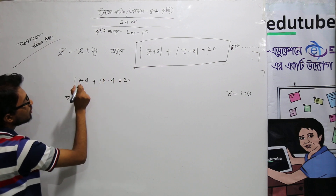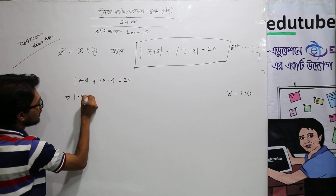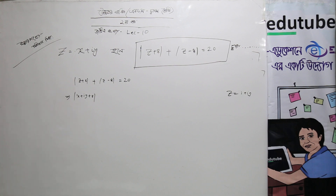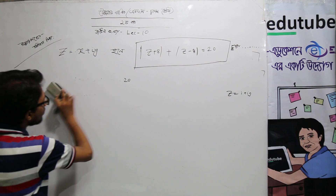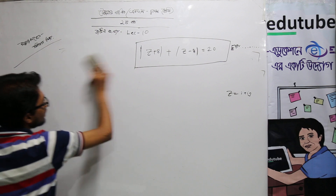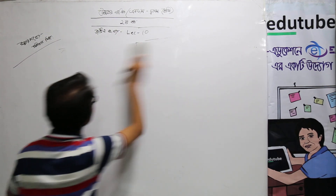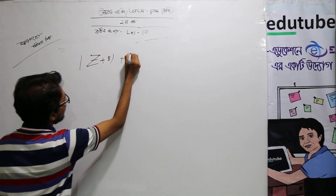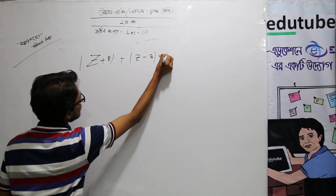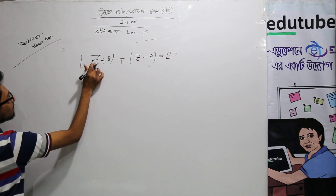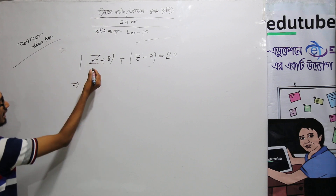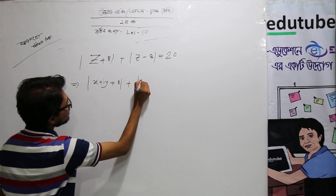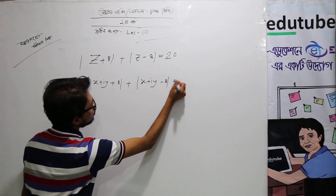Now I'm going to write z as x plus iy. So x plus y plus 8, and z plus 8 equals 20. Then: z plus y, plus x plus y, plus x plus y minus 8 equals 20.